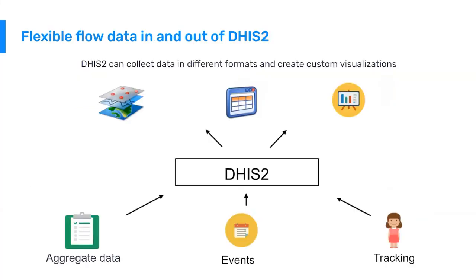So these three types of data — aggregate, event, and tracker data — all feed into the data warehouse that I mentioned earlier. This data warehouse then produces various types of analytics. So we can produce maps, pivot tables, and charts, and we can put all of these onto dashboards. We can do combinations of aggregate data, event data, and tracker data on all of our various different analytics — making one pivot table that includes some aggregate data, some data from events, and some data from tracker at the same time, so that we can do some data triangulation or find more detailed insights as we layer these different data types on top of each other.